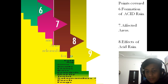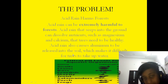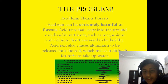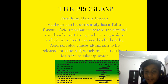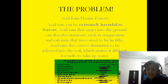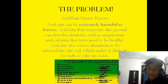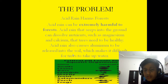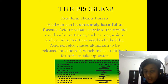Acid rain harms forests. Acid rain can be extremely harmful to forests. Acid rain that seeps into the ground can dissolve nutrients such as magnesium and calcium that trees need to be healthy. Acid rain also causes aluminium to be released into the soil, which makes it difficult for trees to take up water.